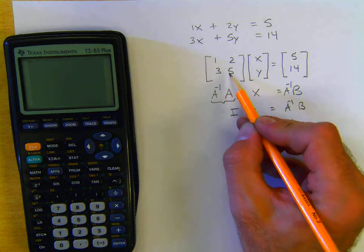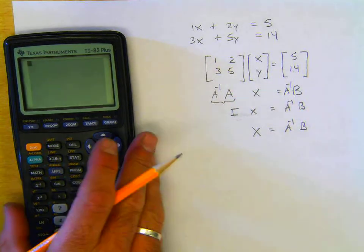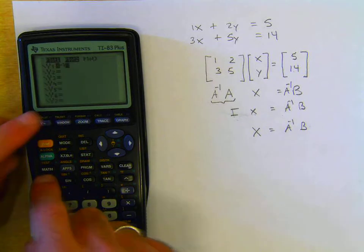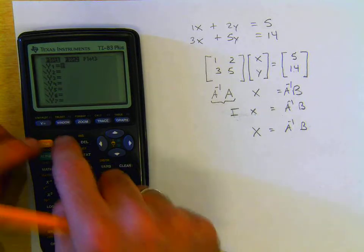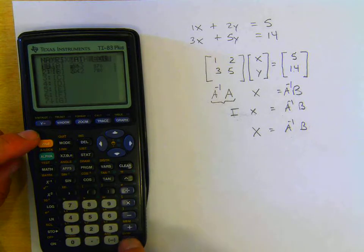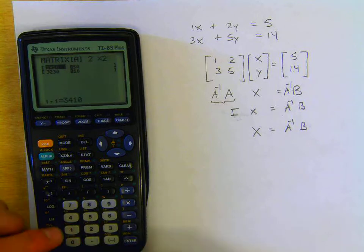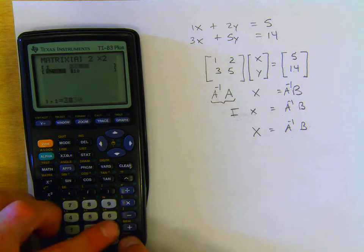Let's substitute or input our A matrix and our B matrix into the calculator. So we're going to go matrix, edit. And our matrix A is a 2 by 2, and the elements are 1, 2, 3, 5.